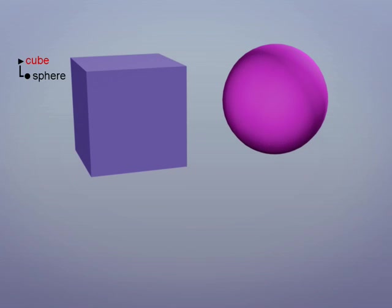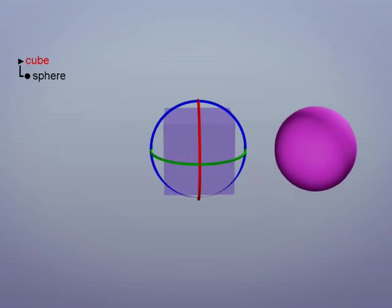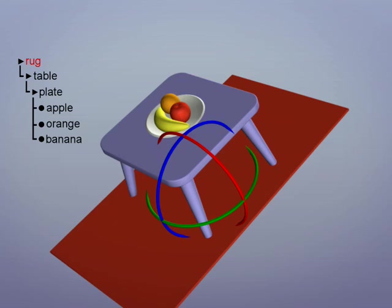3D packages use hierarchies to link the rotation, scale and position of objects to each other. If one object moves, the linked object will move with it.